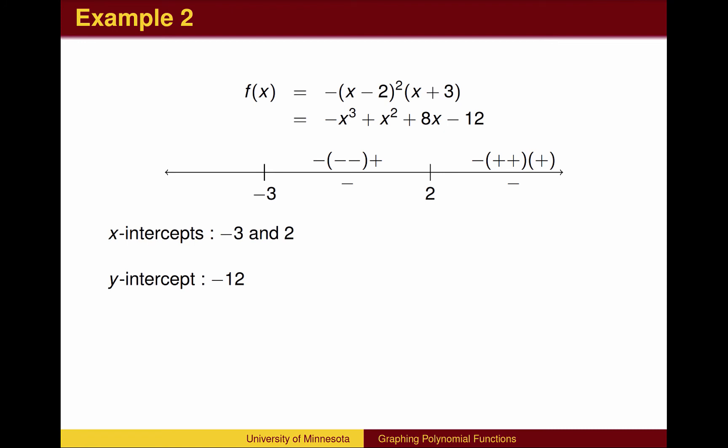If we choose a number for x between -3 and 2, we see that f(x) has its original negative sign. The two factors of x - 2 are now negative. The x + 3 term is still positive. Altogether, the product is negative.